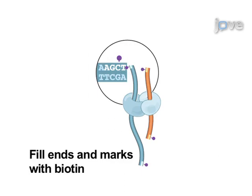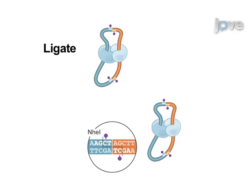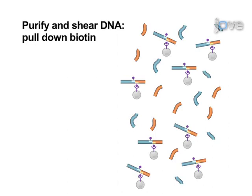Next, a biotinylated residue is incorporated as the five prime overhangs are filled in. Blunt-end ligation is performed under dilute conditions that favour ligation events between cross-linked DNA fragments.